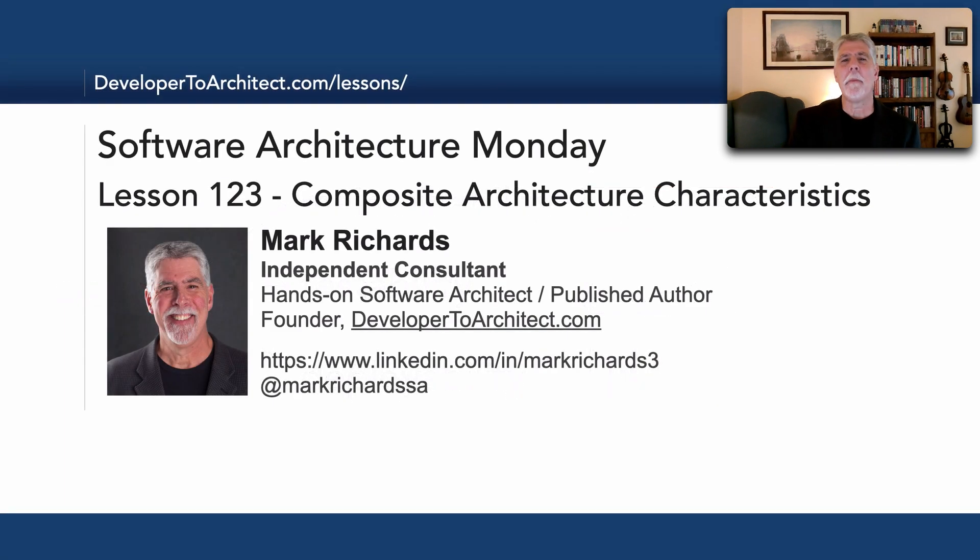So, this has been lesson number 123, composite architecture characteristics. I hope that gave you some sense of how to define some of these characteristics. And also, perhaps more importantly, how to identify when something is actually a composite characteristic that is inclusive of other kinds of architecture characteristics. So, stay tuned in two more weeks for another lesson in Software Architecture Monday. Thank you so much.